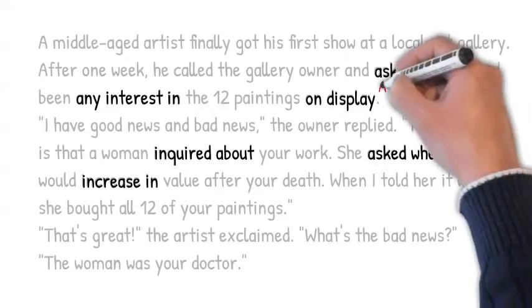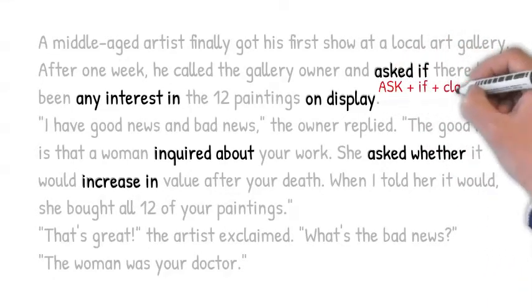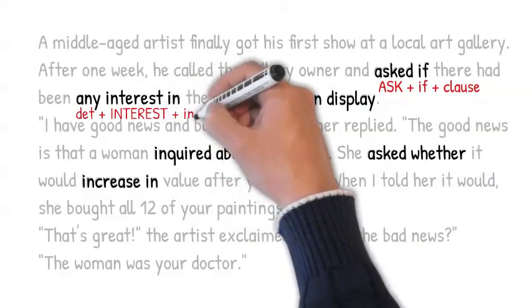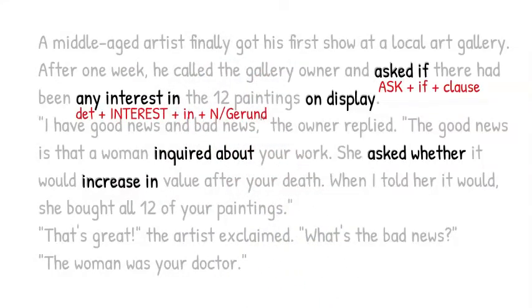Ask if is followed by a clause. That's a sentence inside a sentence. For example, he asked if he could leave. She asked if it was a problem. A determiner plus interest in is followed by a noun or gerund. For example, do you have any interest in going? I have an interest in music. He asked about my interest in working there.